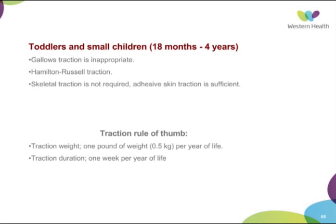In older small children where Gallows traction is not appropriate, Hamilton-Russell traction is a good option, as is Thomas traction. Skeletal traction is not normally required — just skin traction is used. The recommended weight is about one pound, or half a kilogram, per year of life — so if you have a five-year-old, you need half a kilogram times five. Duration is one week of traction per year of life.